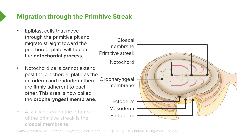Without too much imagination, you can probably forecast that the oropharyngeal membrane will become the mouth. On the opposite side, just past the primitive streak, we have the development of the cloacal membrane, which is going to form the primordia of the anus and the urogenital system's openings to the outside.